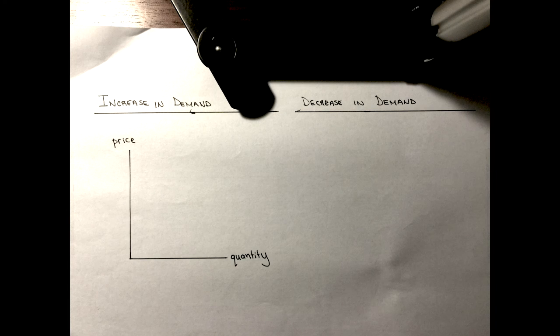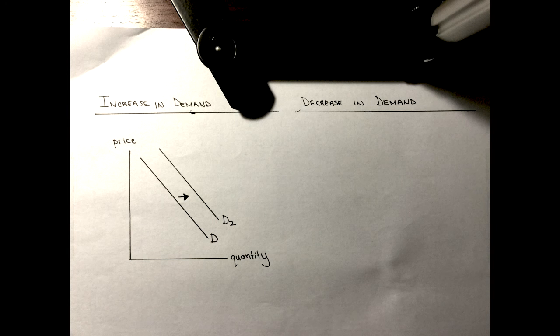In this video we're going to see how you perfectly draw increases and decreases in demand. The first thing you want to make sure you do is put down your axes and label them correctly — the y-axis labeled price and the x-axis labeled quantity. Then when you draw your demand curve, it's downward sloping — label it D. When you increase it, you shift it to the right, label the new curve D2, and make sure you include an arrow.